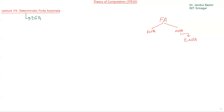First of all, you should know what is a finite automata. Finite automata is a five-tuple entity: Q (set of states), a set of alphabet (sigma), the transition function, the initial state, and the set of final states.